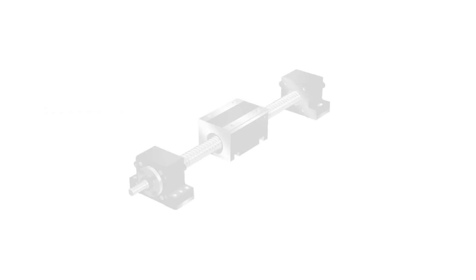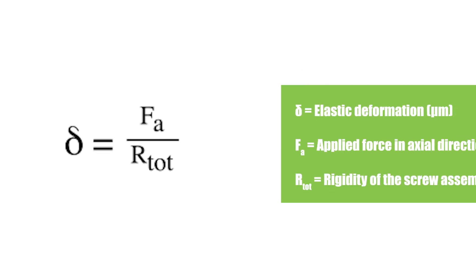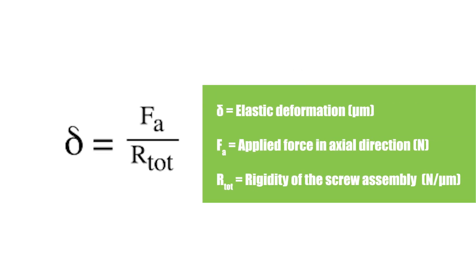Rigidity is an important factor in sizing a ball screw assembly because it determines how much elastic deformation the ball screw will experience in the axial direction under a given force. Elastic deformation is important because it affects the ball screw's positioning accuracy.